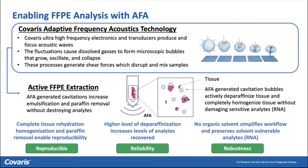With AFA, we call it active deparaffinization for FFPE. No longer do you have to wash your scrubs with any organic chemicals — no mineral oil, no xylene needed. The energy itself can emulsify the wax or paraffin and expose the tissue. The cavitation bubbles created by applying acoustic energy to your sample are strong enough at the right frequency and power level to actively deparaffinize the tissue and completely homogenize it without damaging sensitive analytes such as RNA. It is reproducible, reliable, robust, fast, and effective.